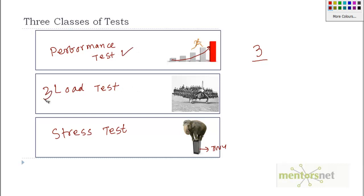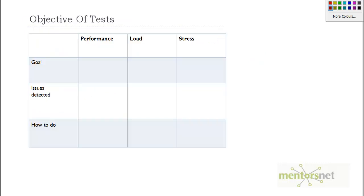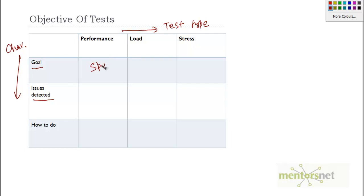So in this table let's fill up what are the goals and what kind of issues we detect in each type — the test type characteristics. The goal of performance testing is to understand the speed of the system, meaning how fast the system is able to respond to a request. The goal of load testing is how well the system sustains under a huge amount of load.